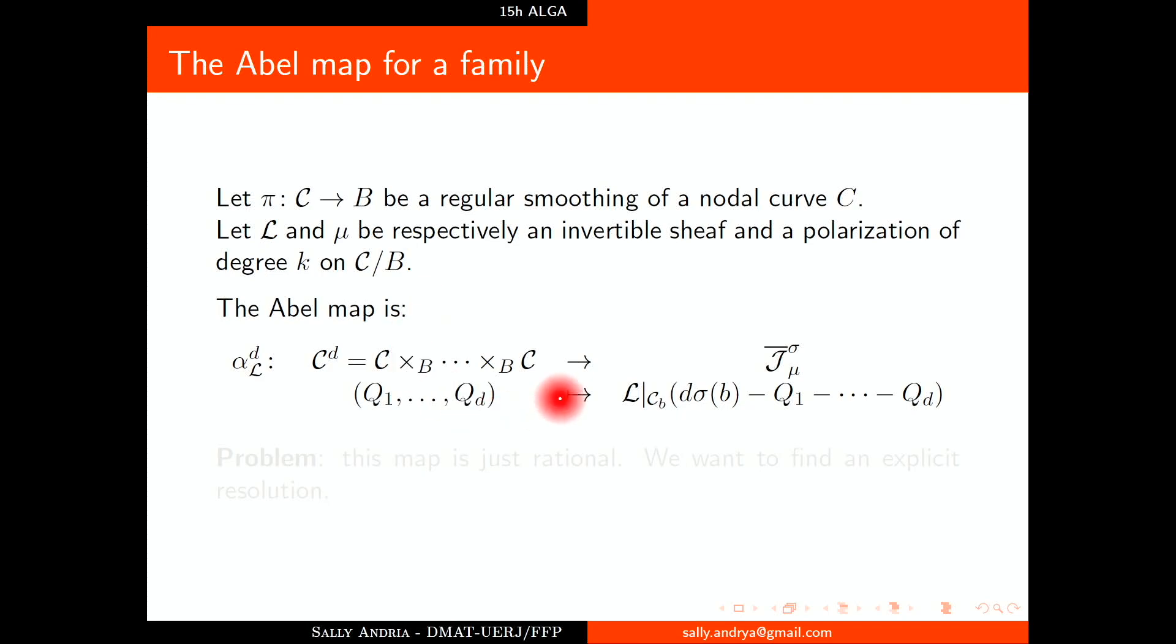The Abel map for a family—the idea to define this is the same, but we have some problems here. We can choose nodes because we have a nodal curve. The problem is that this sheaf is not torsion free, sometimes is invertible but not quite stable. We can't define this map this way and we have to extend this codomain. We use the compactification of the Jacobian of Esteves. The problem with this map is it's just rational and we want to find an explicit resolution of it.